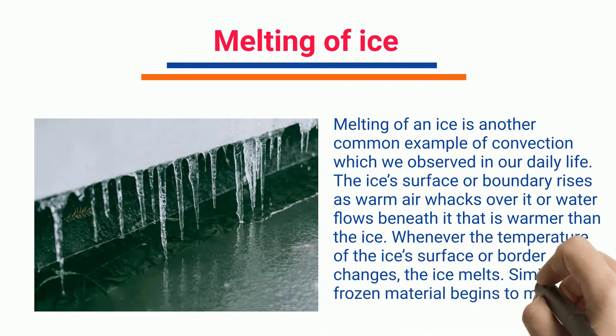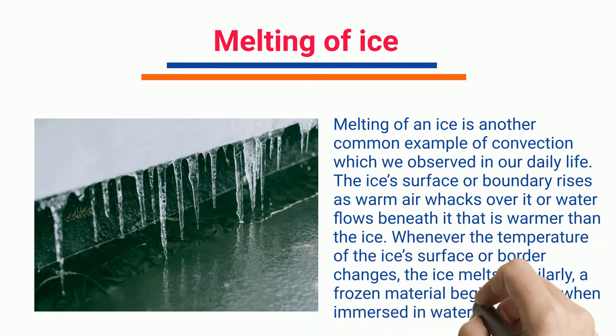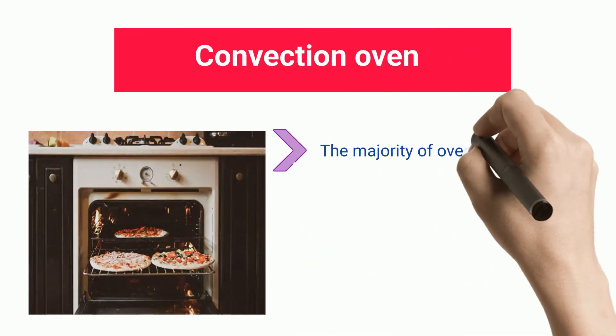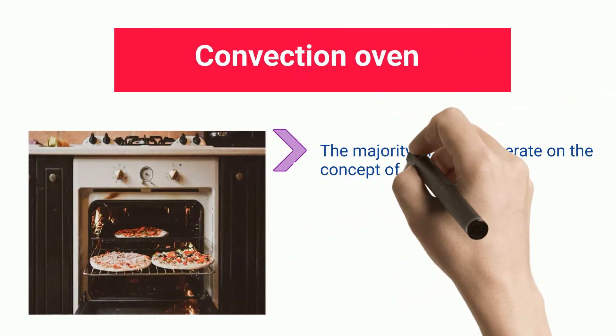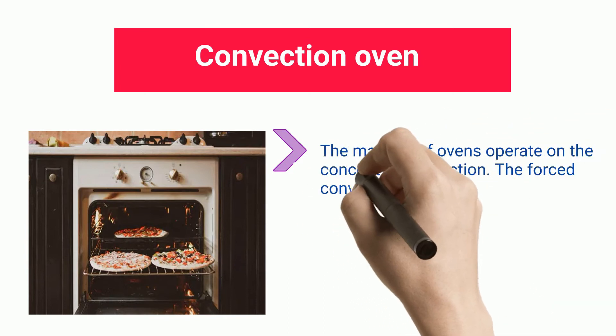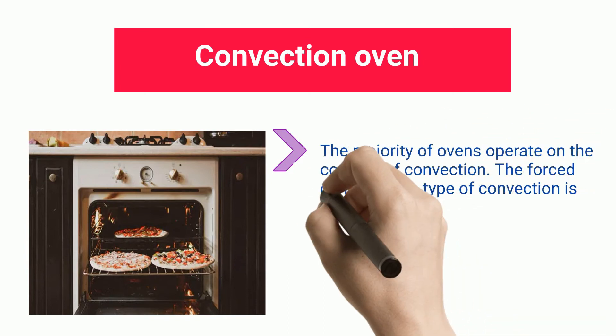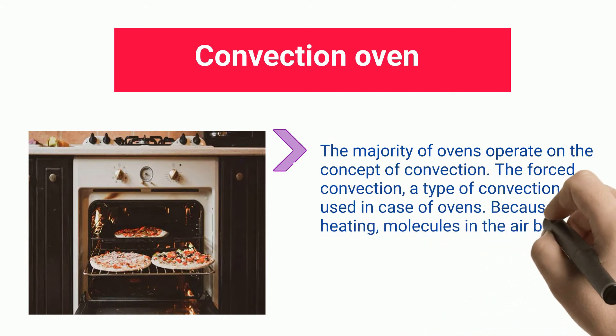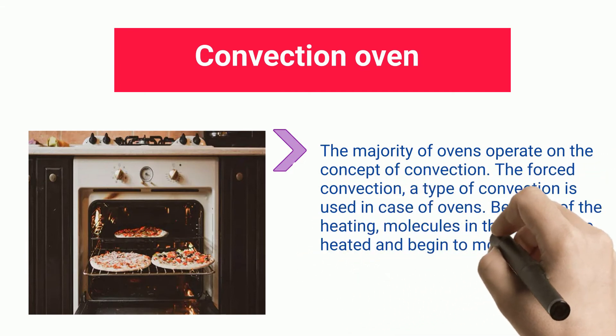Convection oven: The majority of ovens operate on the concept of convection. Forced convection is used in the case of ovens. Because of the heating, molecules in the air become heated and begin to move around more quickly. As a result, warm air circulates inside the oven and the food inside is cooked.